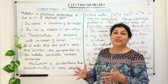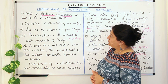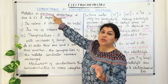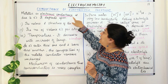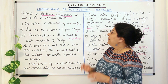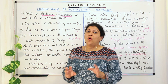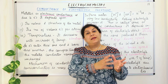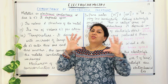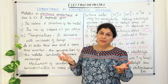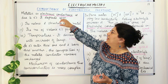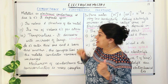Let us now individually understand the factors on which each kind of conductance depends. Metallic or electronic conductance — it is called electronic because the conductance in metals is due to electrons. It depends, number one, on the nature and the structure of the metal. Some metals are better conductors, some are poorer conductors, and the structure and nature of the metal is the first factor on which electronic conductance depends.